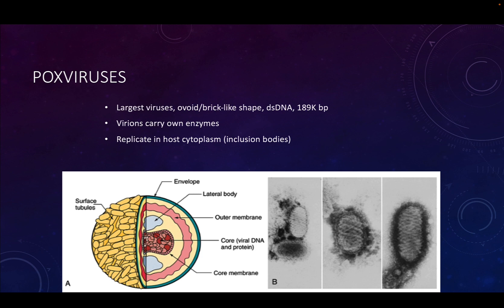If we think about how DNA viruses normally replicate, the viral DNA will enter the nucleus, where the host DNA polymerase helps replicate the DNA and the host RNA polymerase helps transcribe the viral DNA into RNA. But with poxviruses, they don't enter the nucleus. There is no DNA polymerase and no RNA polymerase in the cytoplasm. So these viruses have to bring, at bare minimum, their own DNA polymerase and their own RNA polymerase for transcription and replication to occur.